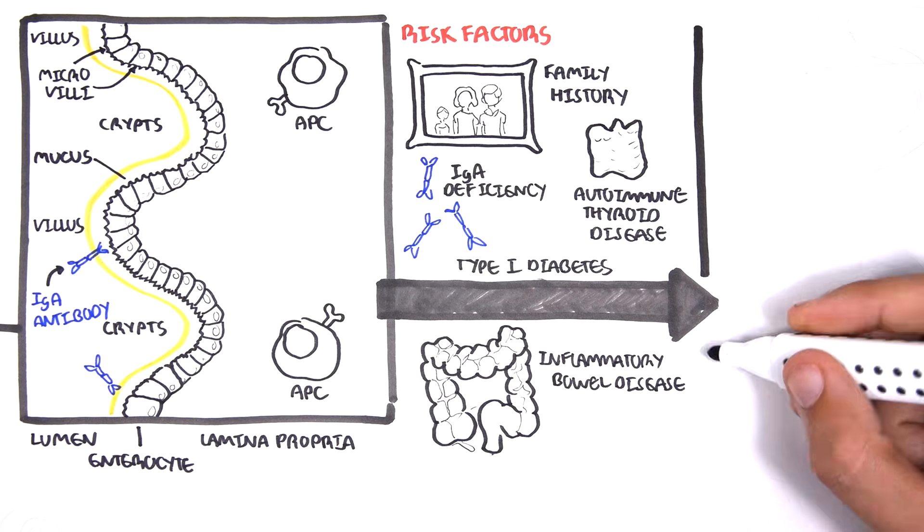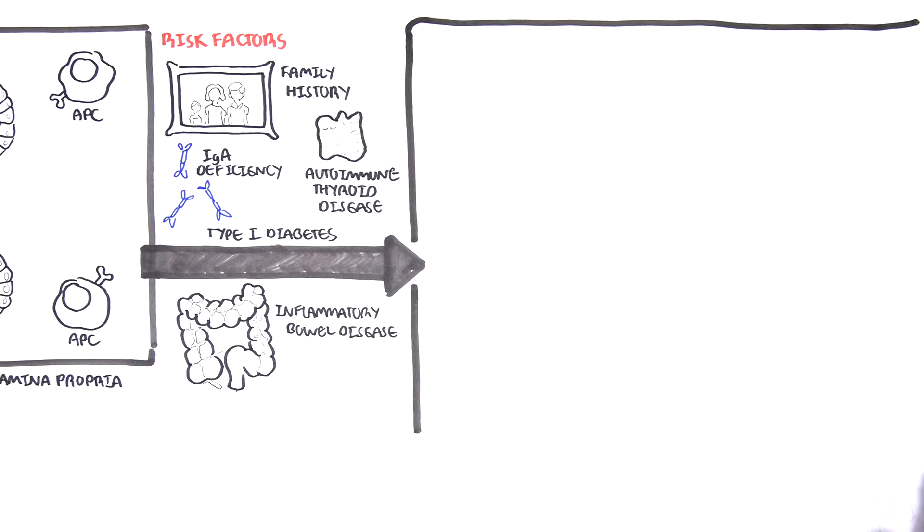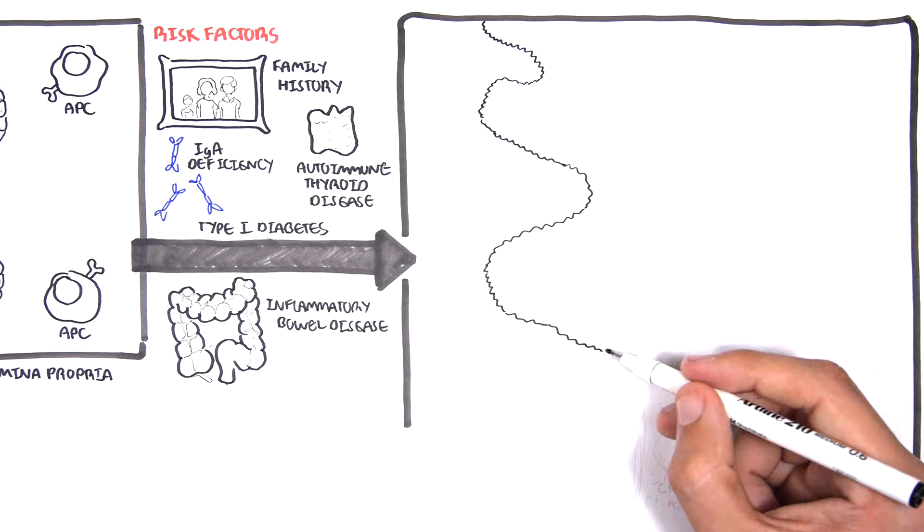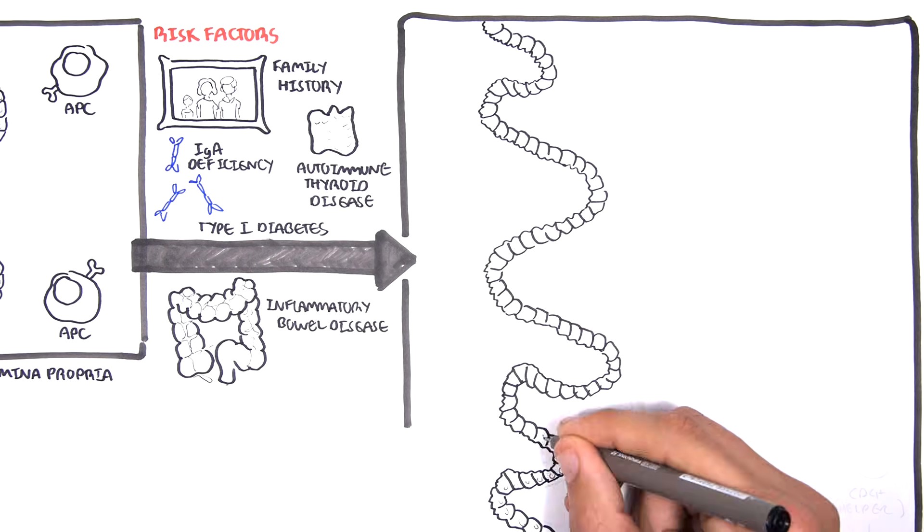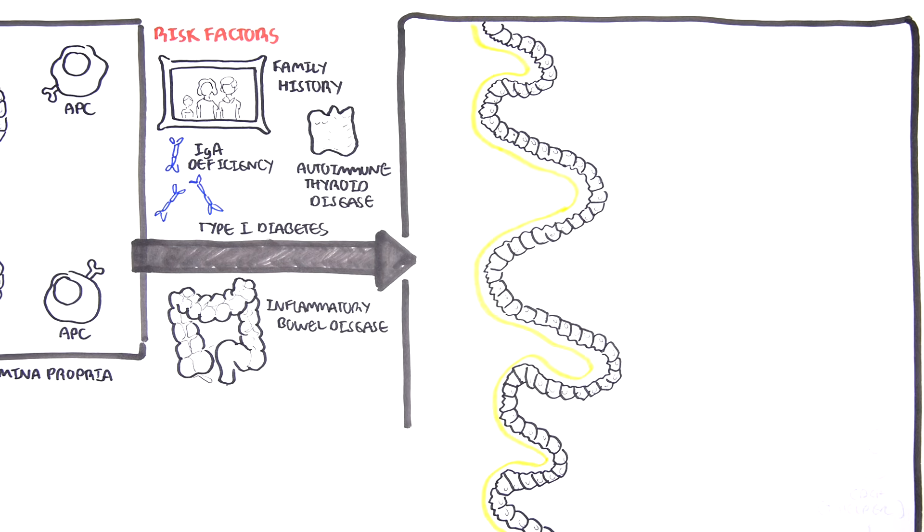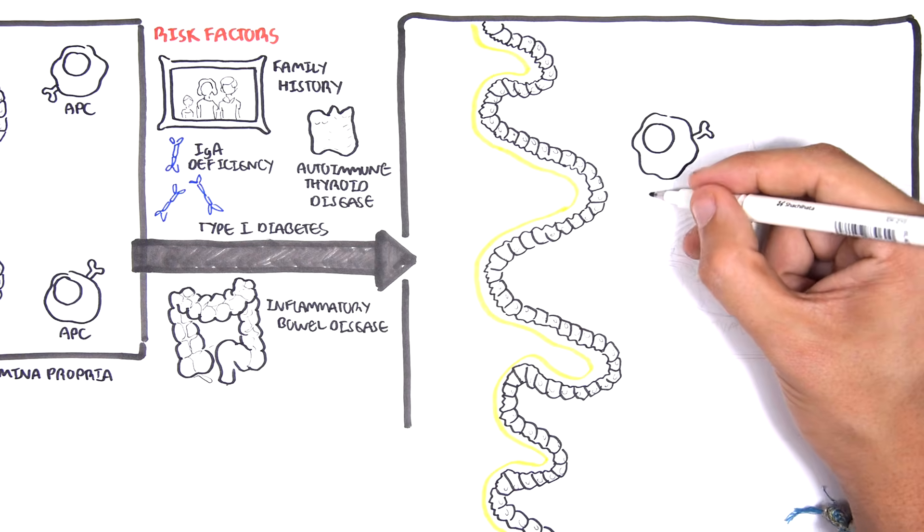The pathophysiology of celiac disease is a mystery, but here I'm going to draw about the current theory. So drawing it out, I'm just drawing the same picture on the left. Here we have the lumen of the small intestine, the enterocytes, and above the enterocytes is the mucus in yellow. Below the enterocytes is the lamina propria, where we can find antigen-presenting cells.